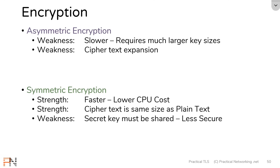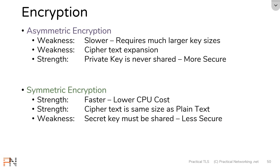A weakness of symmetric encryption is that since you're using the same key on both sides, that secret key must be shared. That's a problem because you have to figure out how to get the same key on either side of the wire in a secure way. Therefore, symmetric encryption is considered less secure than its asymmetric counterpart. With asymmetric encryption, the private key never has to be shared — you never need to send it to anybody else. Since that key never needs to be shared, it ends up being more secure.